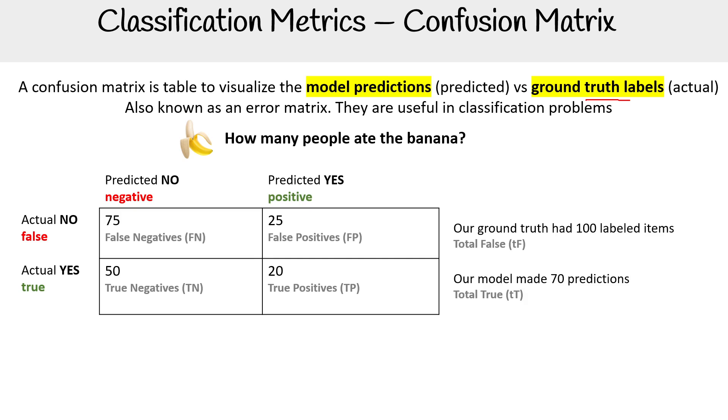So down below, look at the numbers added up here. Because this says true and this is true, we know these are 70 total true predictions because these are correct. And then up here we have our total false. So we have 75 plus 25, so 100 labeled items that are false or that are incorrect.